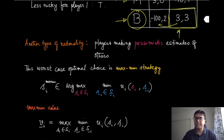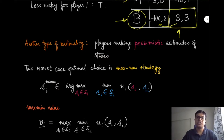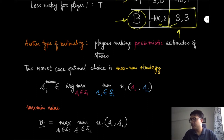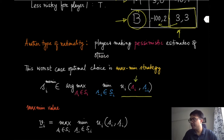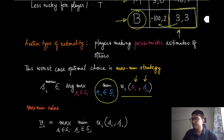This is what we call the maximin strategy: you are assuming as if all the other players together are trying to minimize your utility as much as possible, and you are trying to pick the action or strategy that maximizes it. You can look at this expression from inside out. First, look at the utility of player i given the strategy it picks and the strategies all other players pick. Then look at the worst possible situation — the minimum over s_{-i} — and then pick the strategy that maximizes that minimum value. That is the maximin strategy for player i.